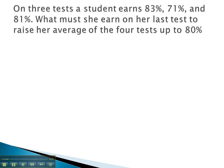Here we're told on three tests, a student earns an 83, a 71, and an 81. She wants her average on all four tests to be 80%. We can calculate the sum that she needs to shoot for.